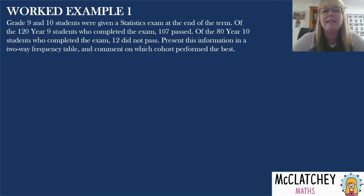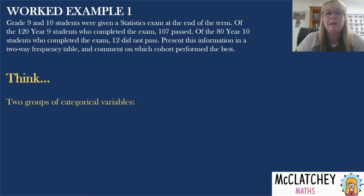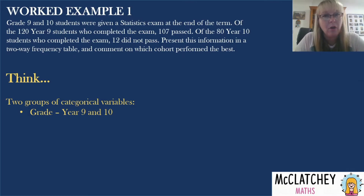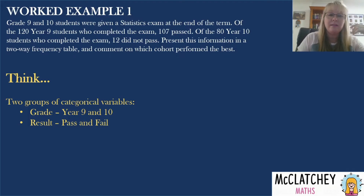Worked example one: Grade 9 and 10 students are given a statistics exam at the end of term. There are 120 Year 9 students and 107 passed, and 80 Year 10 students and 12 did not pass. We need to put this into a two-way frequency table and comment on which cohort performed best. We've got two categorical variables: what grade the students are in — either Year 9 or Year 10, not both — and whether they passed or failed. Numbers will only fall into one spot in the table.